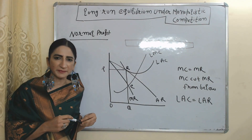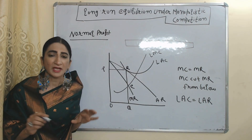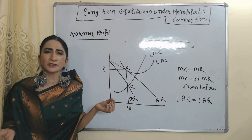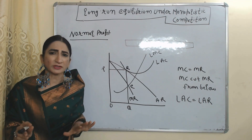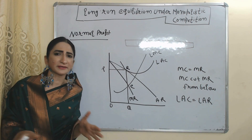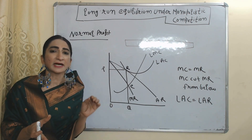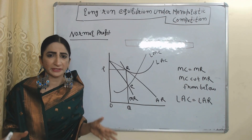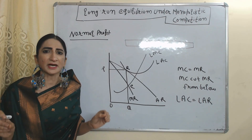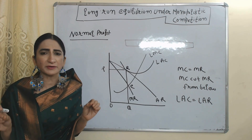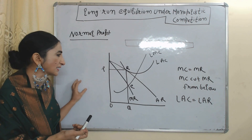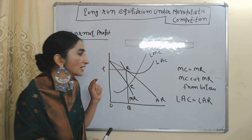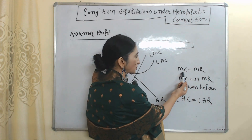Now we will see long run equilibrium under monopolistic competition. In the short run, it is possible for a monopolistic firm to receive super normal profit, normal profit, or loss because in the short run firms cannot enter or exit the market. But in the long run, any firm can enter and exit the market and there is much more competition. Therefore, in the long run under monopolistic competition, a firm will always receive only normal profit.